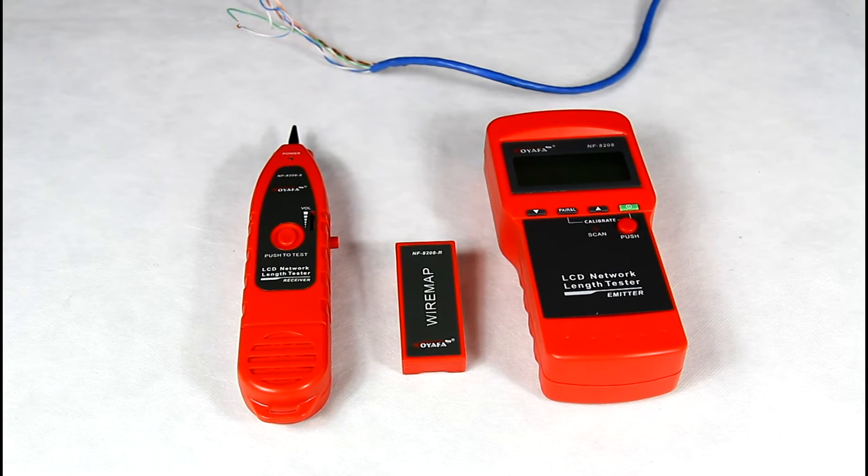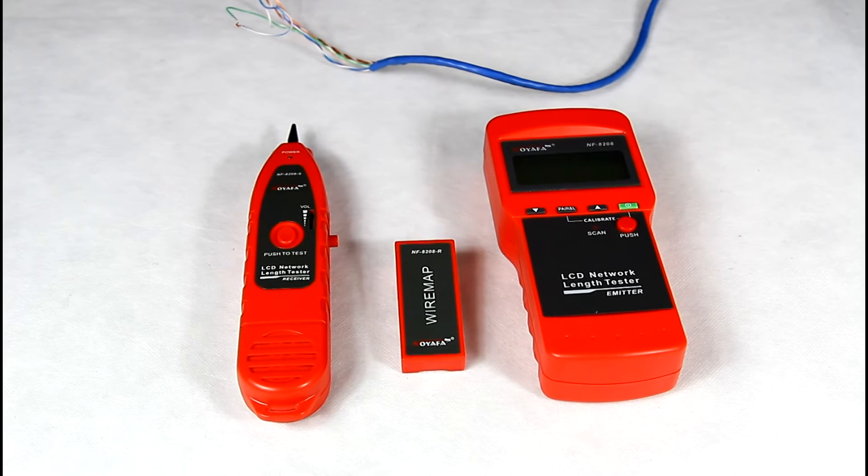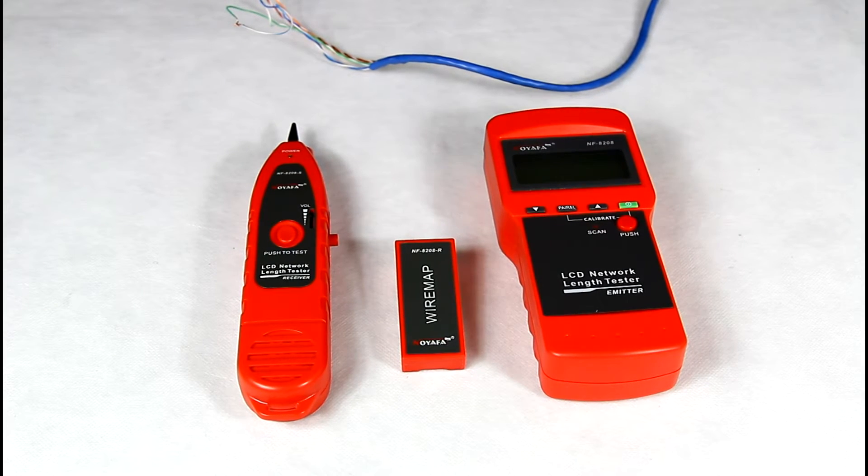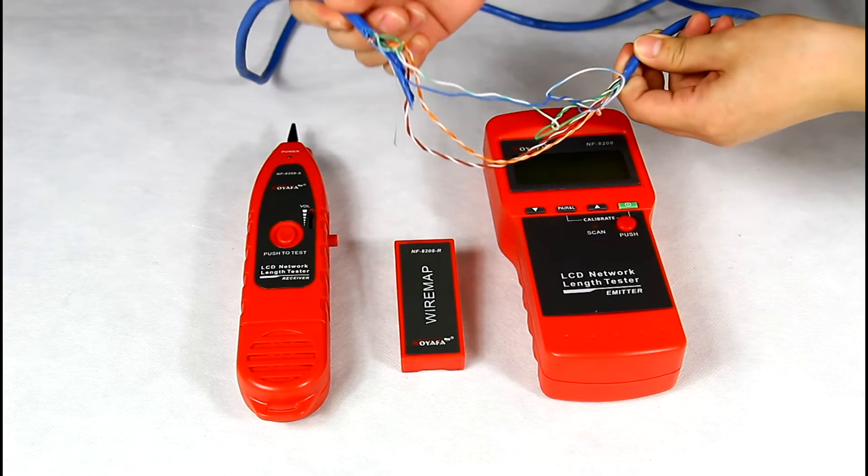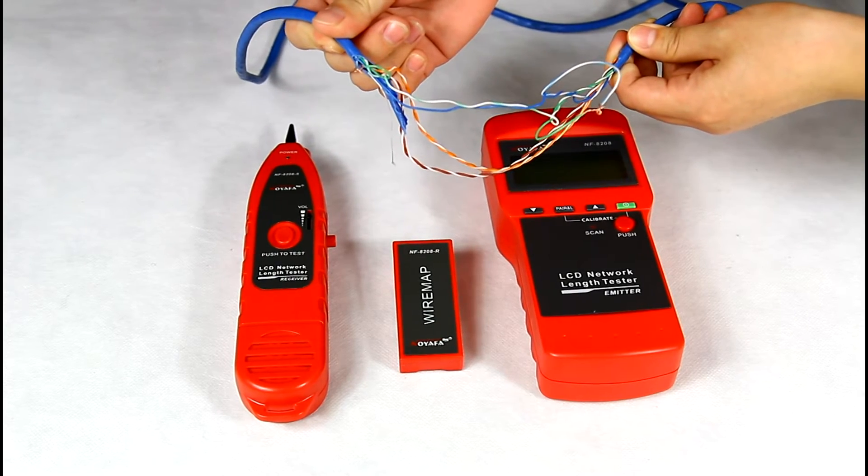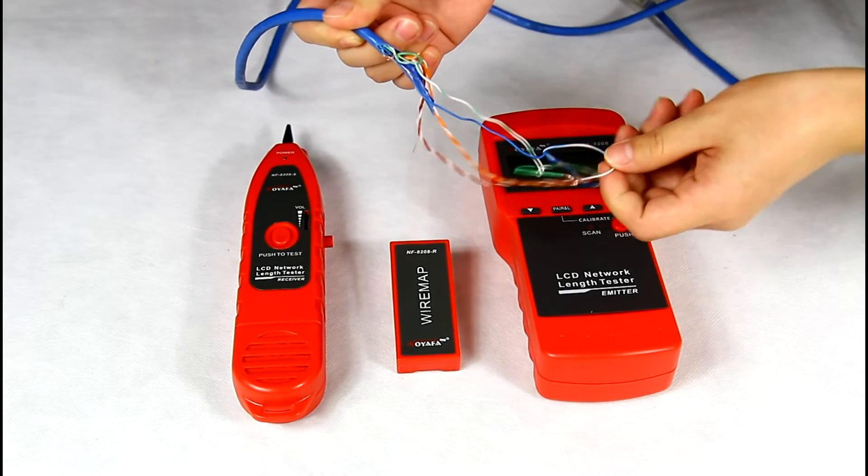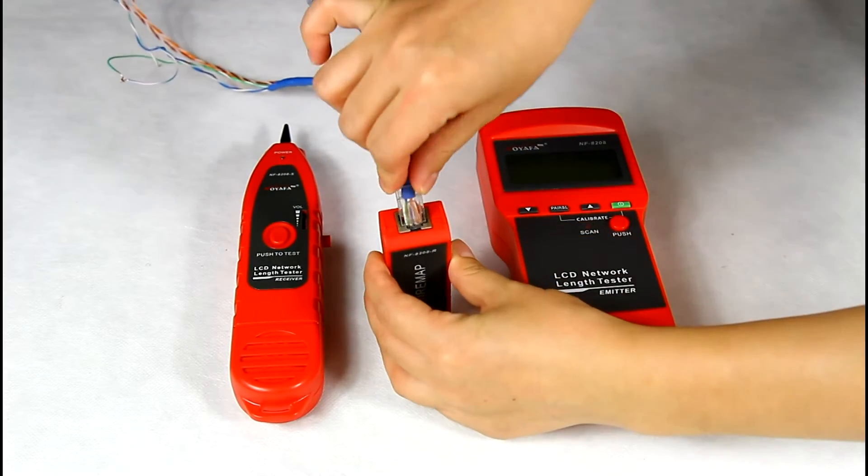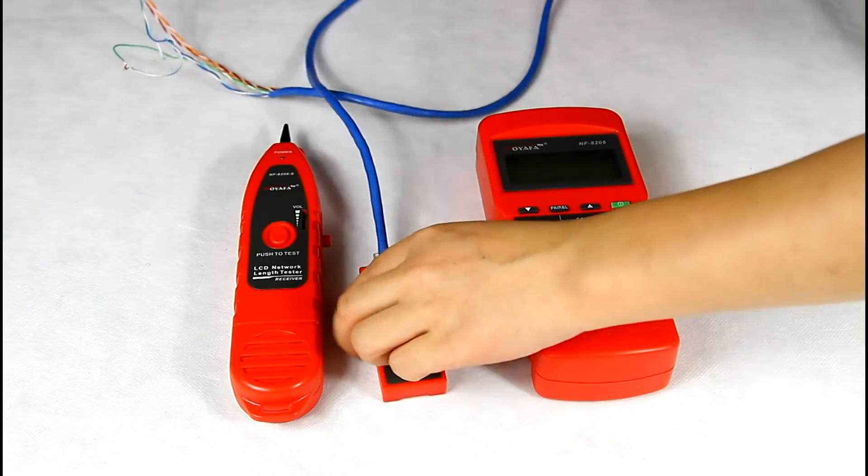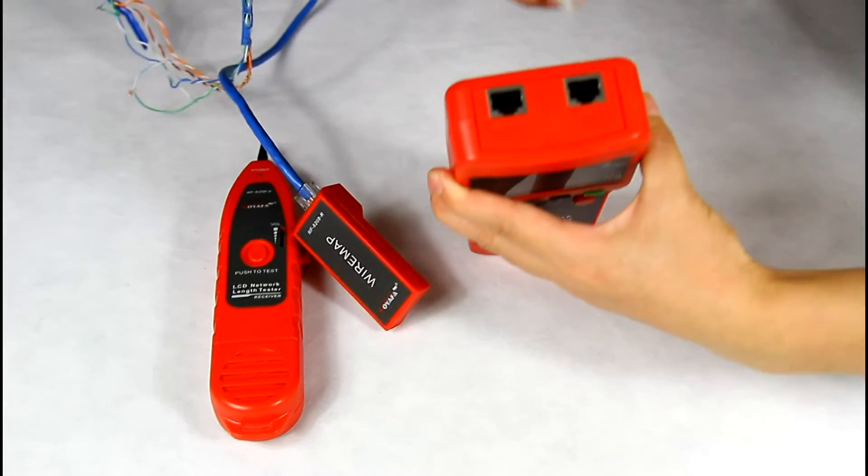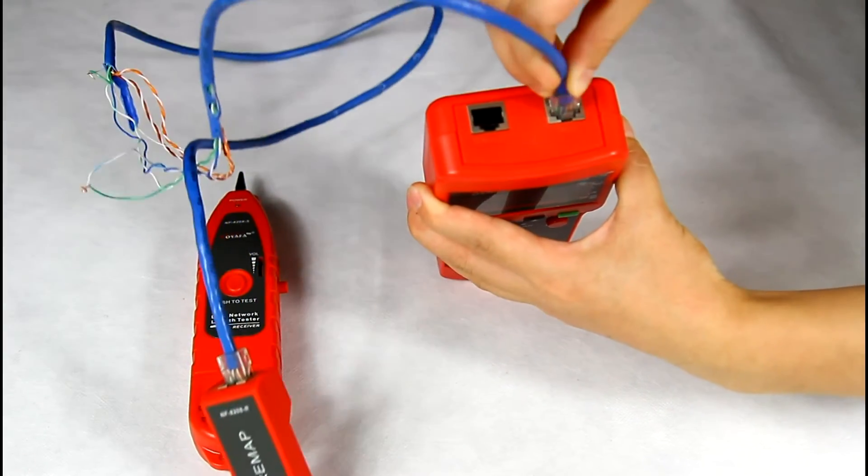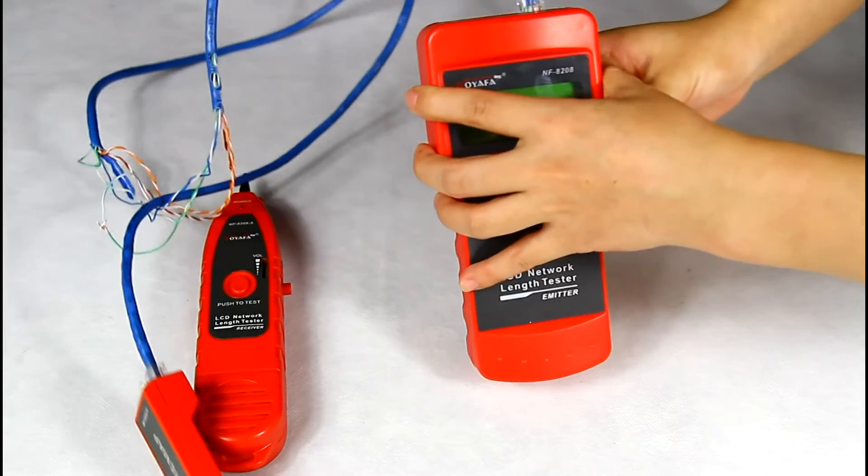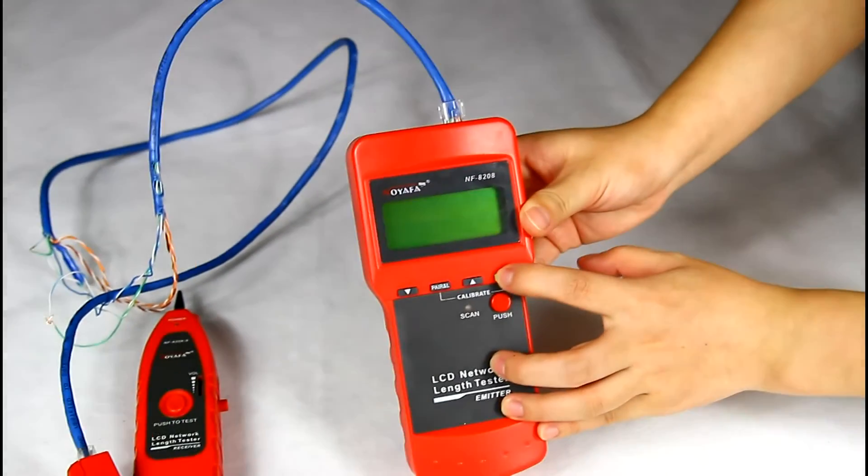Now, let me show you how to test network cable continuity. Let's use a short network cable as example. Put one side of the cable into the remote and another side to the main port of the main master. And then, turn on the tester.